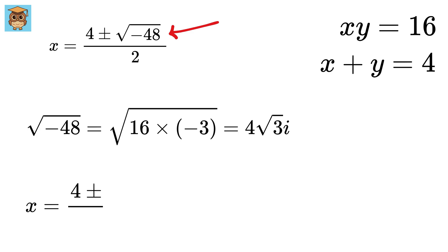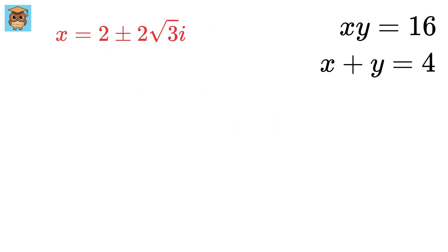So, this becomes 4 plus minus 4 root 3i by 2, or 2 plus minus 2 root 3i. Awesome!